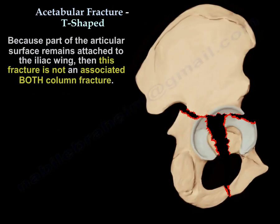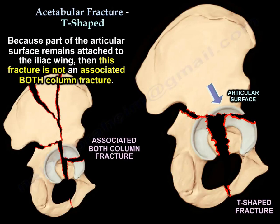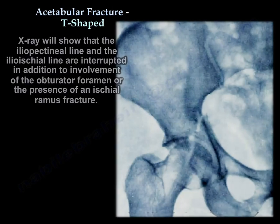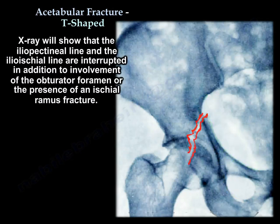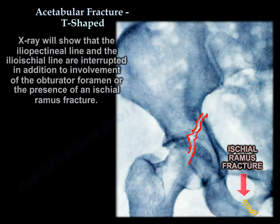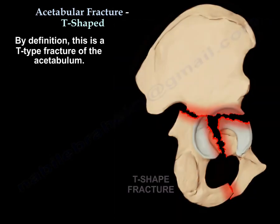Because part of the articular surface remains attached to the iliac wing, this fracture is not an associated both-column fracture. X-ray will show the iliopectineal line and the ilioischial line are interrupted, in addition to involvement of the obturator foramen or the presence of an ischial ramus fracture. By definition, this is a T-type fracture of the acetabulum.